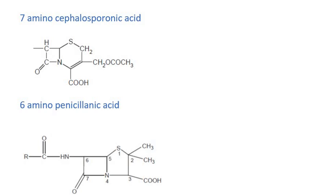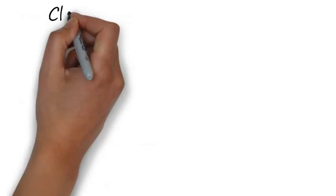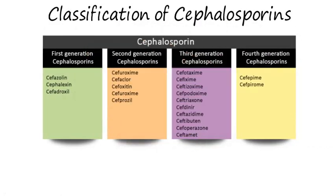In cephalosporins, the structural entity is seven aminocephalosporanic acid. Now we are doing the classification of cephalosporins. It actually has four generations: first generation, second generation, third generation, and fourth generation. These generations are on the basis of the applicability or the spectra of the antibiotics, with each having more advantages over the previous generation.